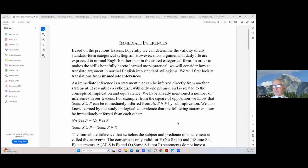We're going to first look at the translation from immediate inferences. An immediate inference is a statement that can be inferred directly from another statement. So one statement infers another statement. It resembles a syllogism—you know, a major premise, minor premise, and the conclusion—but with only one premise, and is related to the concepts of implication and equivalence we studied before.